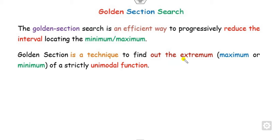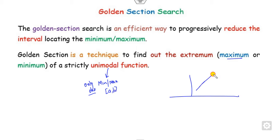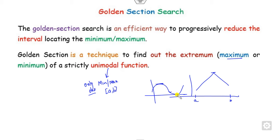Golden section is a technique to find either the maximum or minimum of a strictly unimodal function. A unimodal function is one that has either only one maximum or one minimum in the particular interval a to b. You can see that in this interval a to b there is only one maximum. Also if the function has one maximum and one minimum, these are unimodal functions.